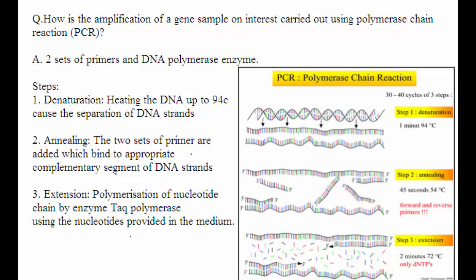Now we will see the three steps that are involved in PCR. PCR consists of three steps: denaturation, annealing, and extension.